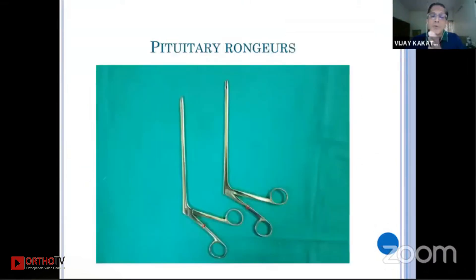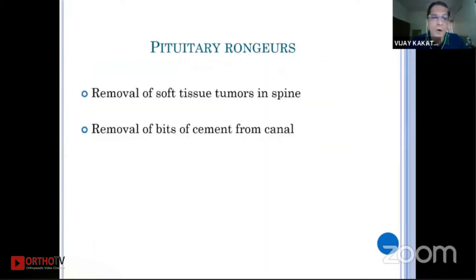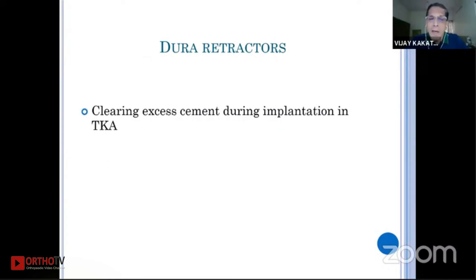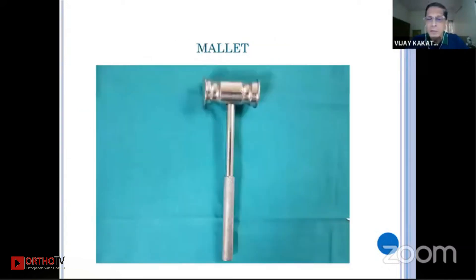The pituitary rongeurs, normally meant for removing the disc — if you make a slightly longer design, you can use them for removal of cement from the canal when doing revision joint surgeries, and removal of soft tissue tumors in the spinal cord. Dura retractors, normally meant for spine surgery, are very commonly used for taking out extra cement when doing total joint surgery, especially total knee replacement, and can be used very efficiently for the same.